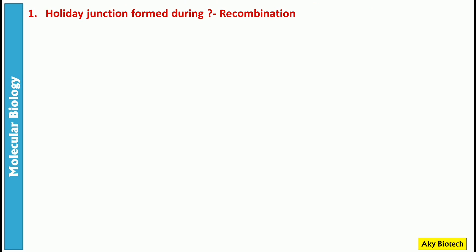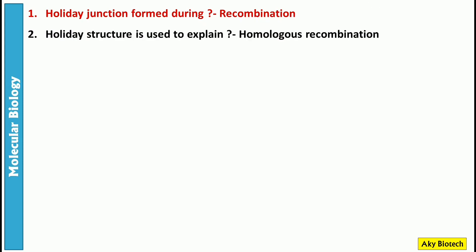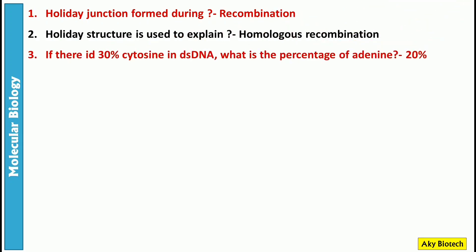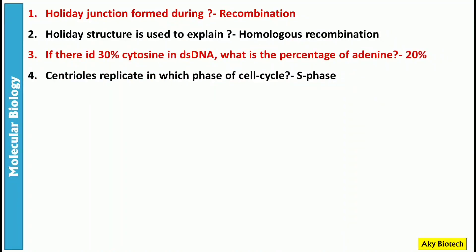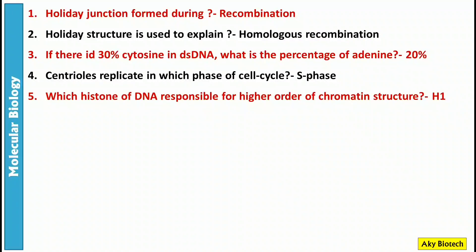Question 1: Holliday junction forms during recombination. Question 2: Holliday structure is used to explain homologous recombination. Question 3: If there is 30 percent cytosine in double-stranded DNA, what is the percentage of adenine? It's 20 percent. Question 4: Centrioles replicate in which phase of the cell cycle? They replicate in S phase.